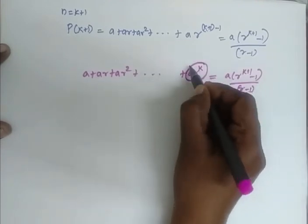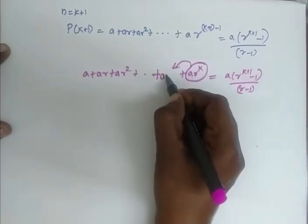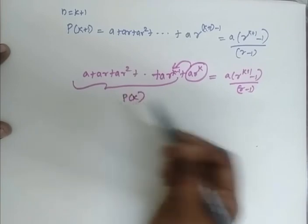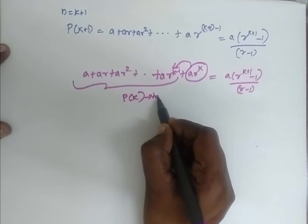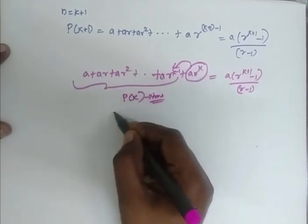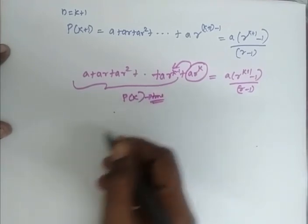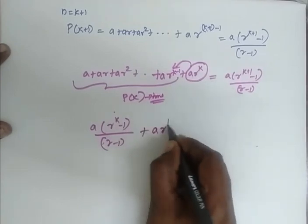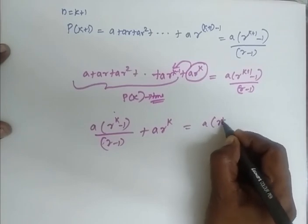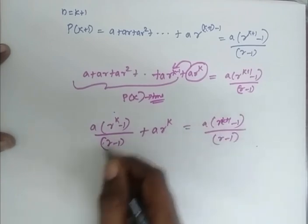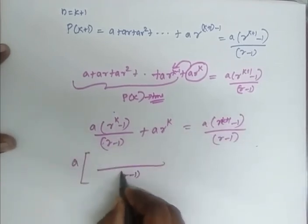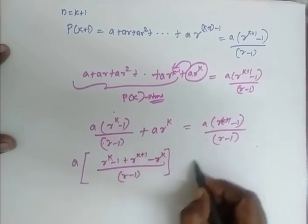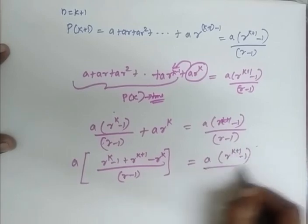The term present before the last is plus a r power k, and what precedes it — a plus a r plus ... plus a r power k minus 1 — is my P of K. Since I have proved P of K is true, I substitute: a into r power k minus 1 divided by r minus 1, plus a r power k, which should equal the right-hand side: a into r power k plus 1 minus 1 by r minus 1. Taking a as a common factor and finding the LCM, I get a times r power k minus 1 plus r power k plus 1 minus r power k, which equals a into r power k plus 1 minus 1 by r minus 1.